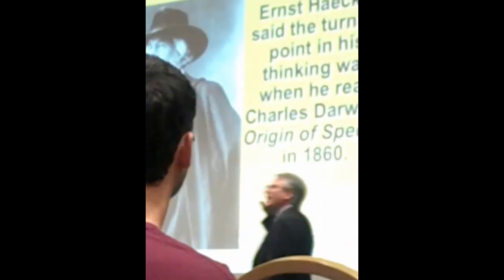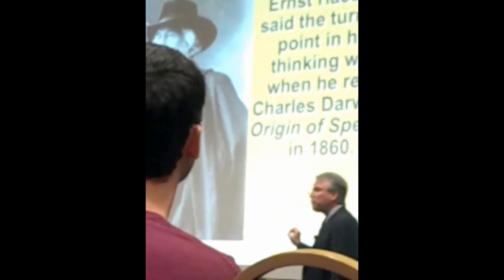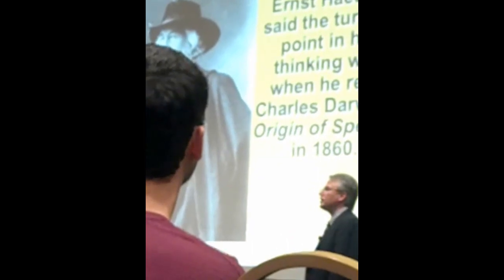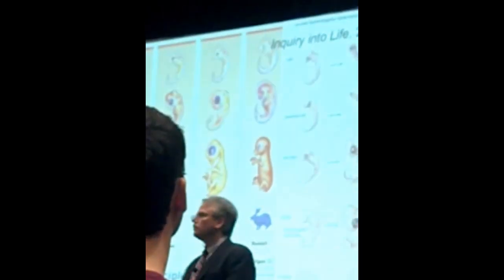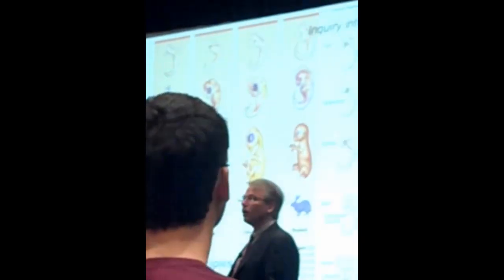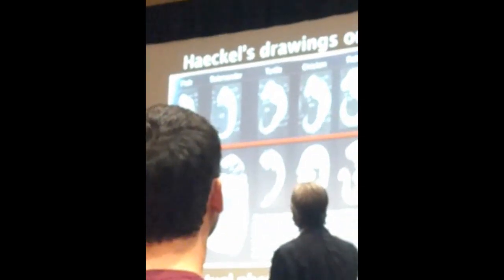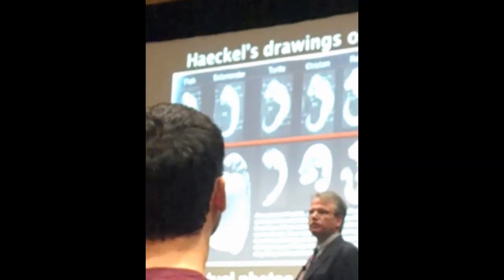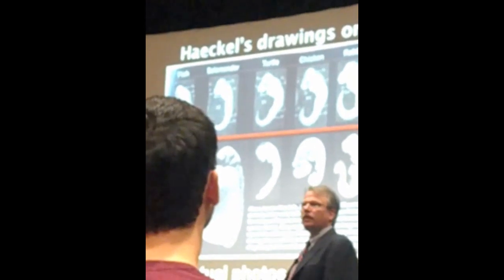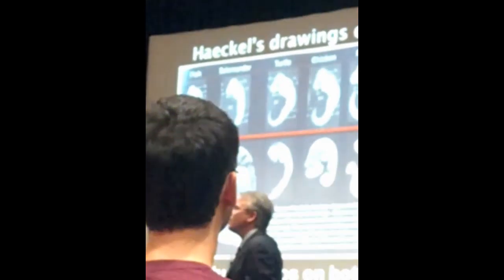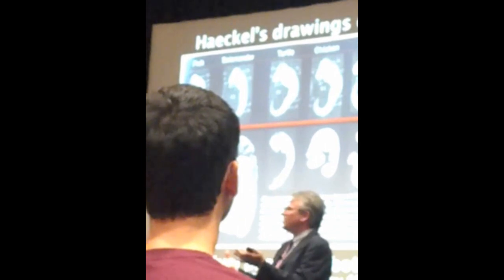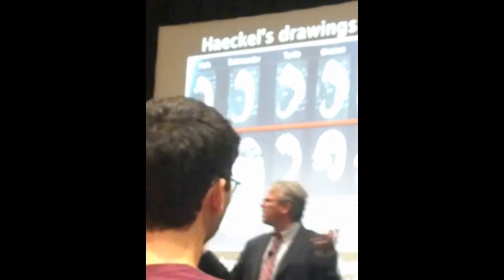And surely we're not still using them? Oh yes we are — we've colorized them and made them prettier, but these are still Ernst Haeckel's images. This guy was living in the 1800s. We've known for over a hundred years that this is total fabrication, and yet this is one of the pieces of evidence being used to say Darwin was right.